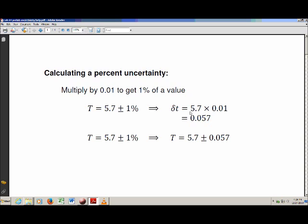So you take your final value, 5.7, multiply by 0.01. That gives you 1% of 5.7, and that is your absolute uncertainty. So that's what I've written down here, is it's 5.7 plus or minus 0.057.